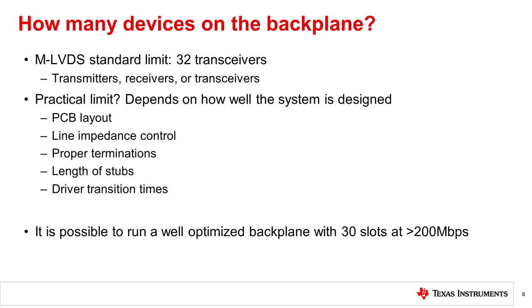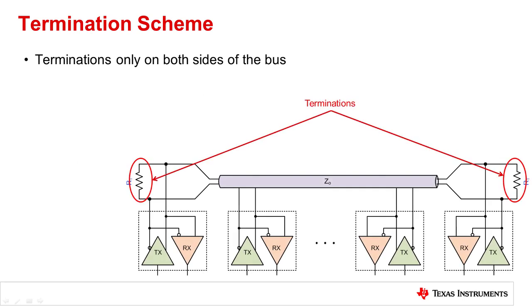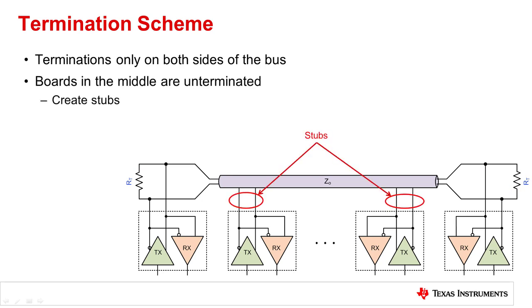It has been demonstrated that it is possible to run a well-optimized MLVDS backplane with 30 slots populated with plug-in boards at greater than 200 megabits per second. In MLVDS, double terminations are used — one on each end of the bus. The intermediate plug-in boards on the backplane are not terminated and therefore create stubs or unterminated transmission lines. These stubs create impedance mismatches on the bus which can potentially cause reflections.